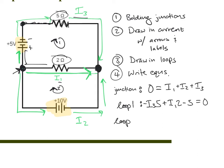Following the same process for loop two: starting at the upper left corner, going across the 2-ohm resistor in the same direction as current, we lose voltage: minus I1 times 2. Continuing to the battery — going through in the correct direction this time — adds 10 volts. Going back to start, the total must equal zero.